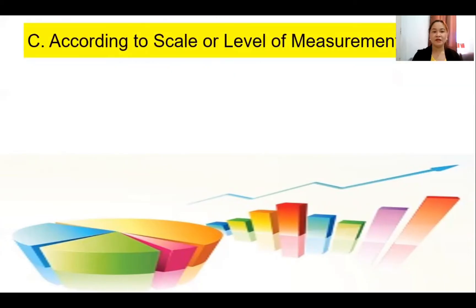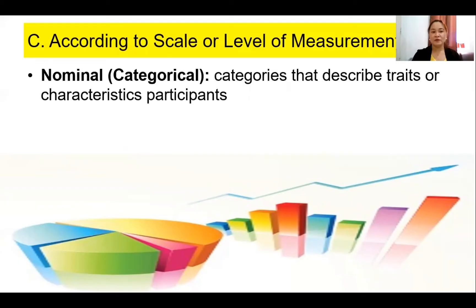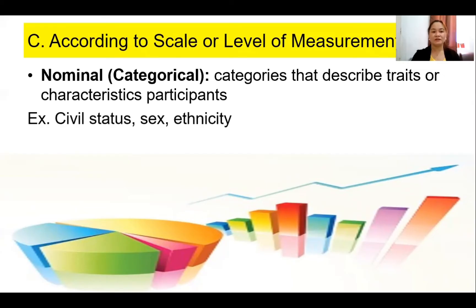Next, according to the scale or level of measurement, we have nominal or categorical. This is the first level of measurement — categories that describe traits or characteristics of participants. Examples: civil status, sex, and ethnicity. Male and female have the same level, so that's nominal — it's not in order.